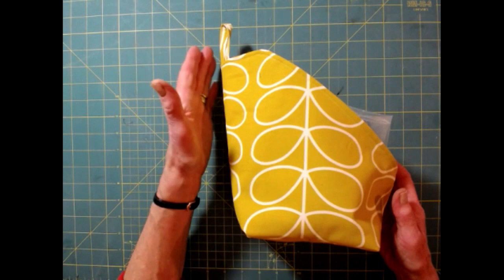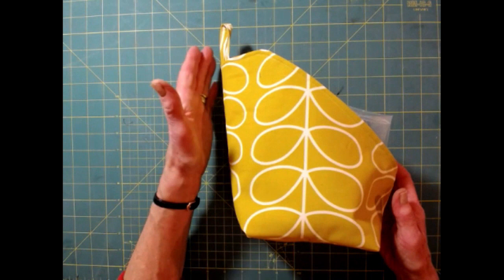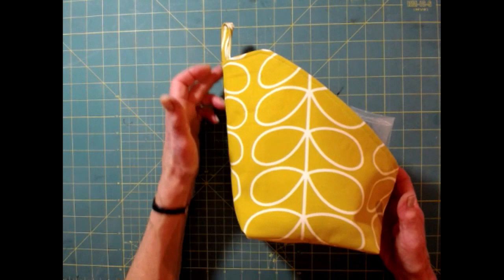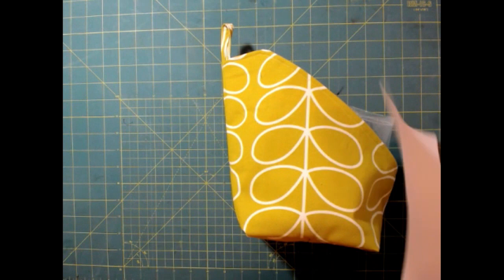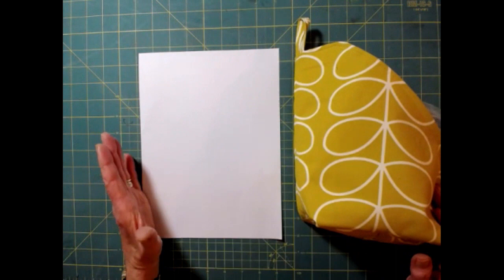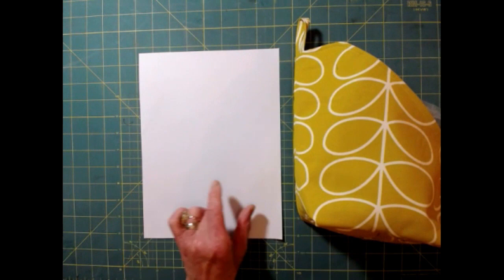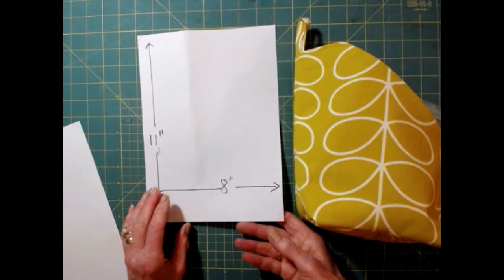The way you make the pattern is you take the height of the pod plus half the measurement of the base, which is 9 plus half of 4 is 2. So you need an 11 inch piece of paper that is 11 inches top to bottom. You then need to have a piece of paper that is twice the width of the base. So the base is going to be 4 inches, so I have a piece of paper that is 8 inches wide.